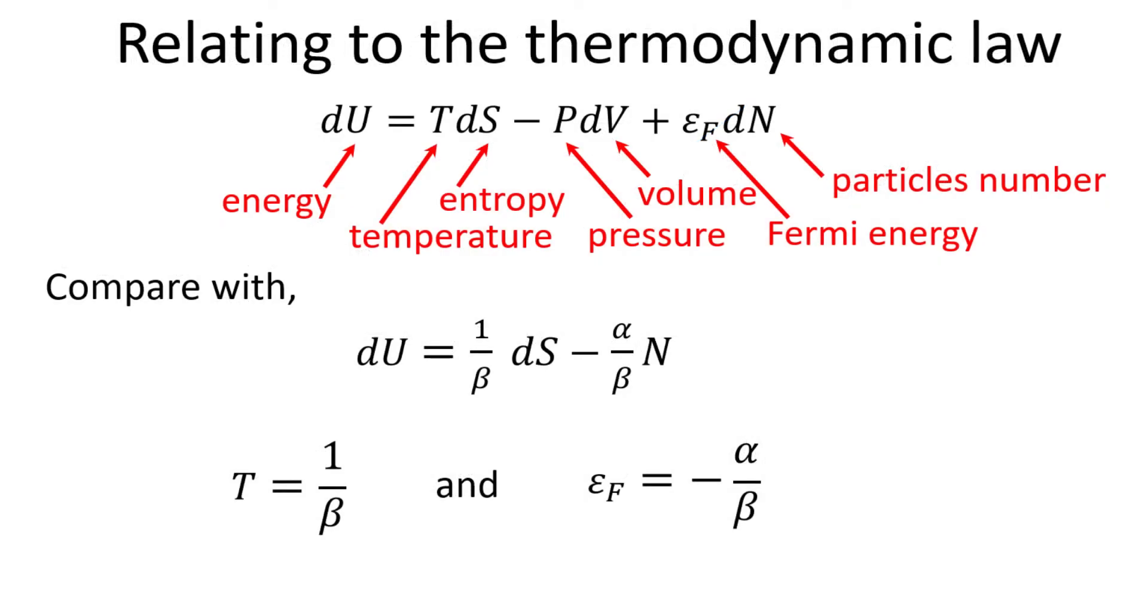We recall the well-known thermodynamics law. A quick comparison to our microscopic expression of the total energy differential to the thermodynamics law allows us to relate temperature T to 1 over beta, and the Fermi energy to the minus of alpha divided by beta.